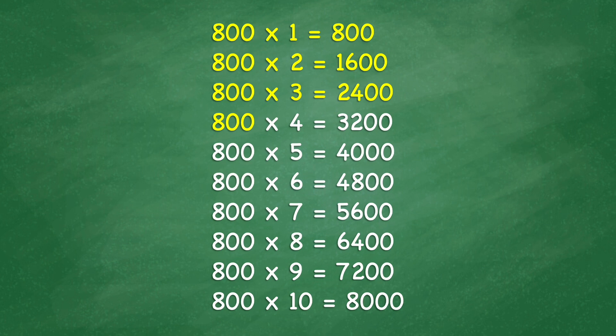800 times 4 equals 3,200. 800 times 5 equals 4,000. 800 times 6 equals 4,800.